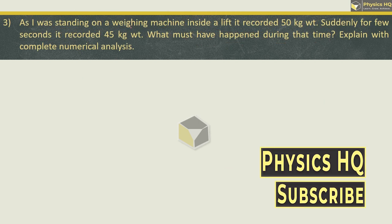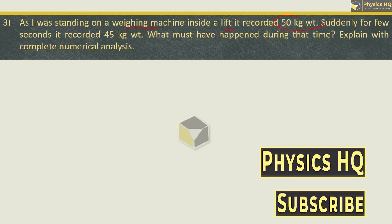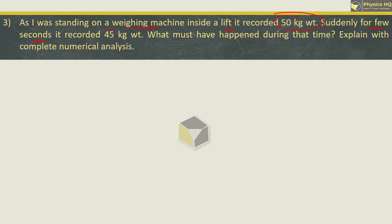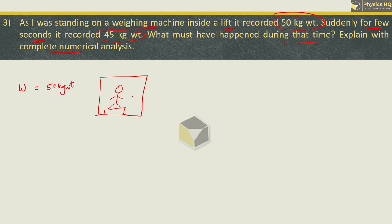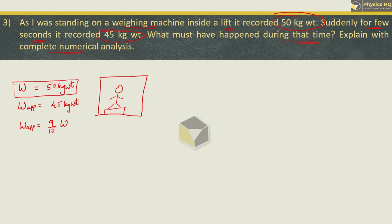Next problem: I was standing on a weighing machine inside a lift. It recorded 50 kg weight. Suddenly for a few seconds it recorded 45 kg weight. What must have happened during that time? The actual weight was 50 kg and the apparent weight was 45 kg. The apparent weight to actual weight ratio is 45/50 = 9/10.